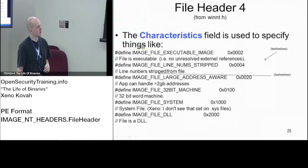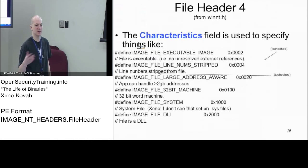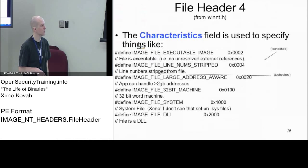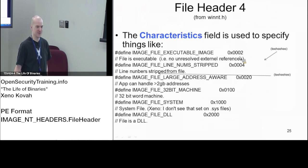The third field we care about in the file header is characteristics. There'll actually be a bunch of different characteristic flags, and it'll be kind of hard to keep track of what's where. There are some characteristics we care about here, and I still haven't updated this slide for all of them.